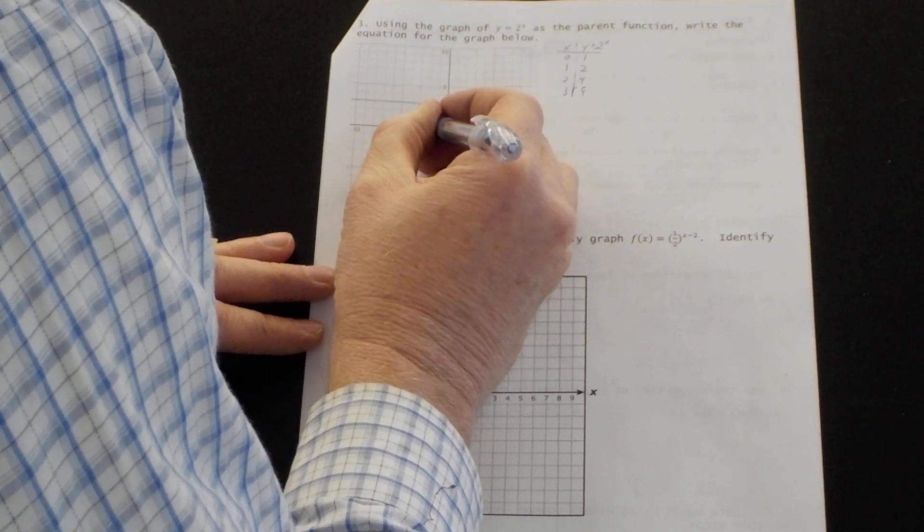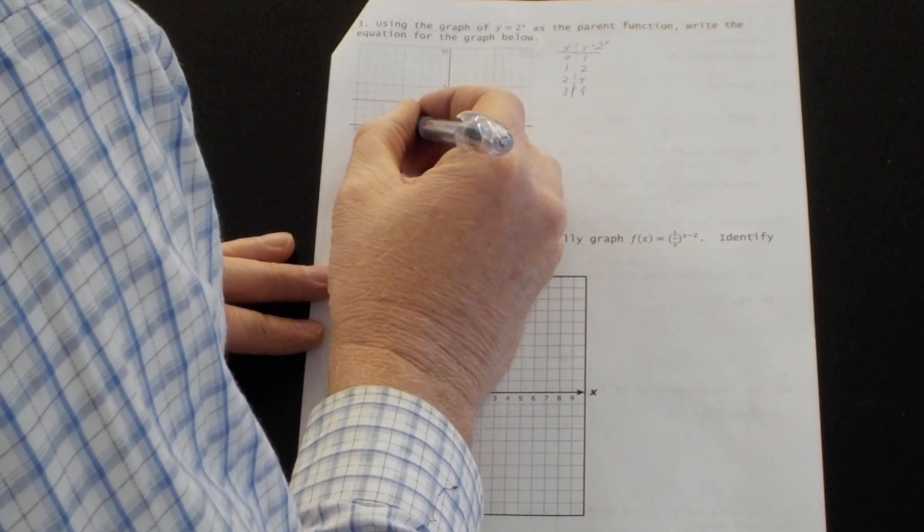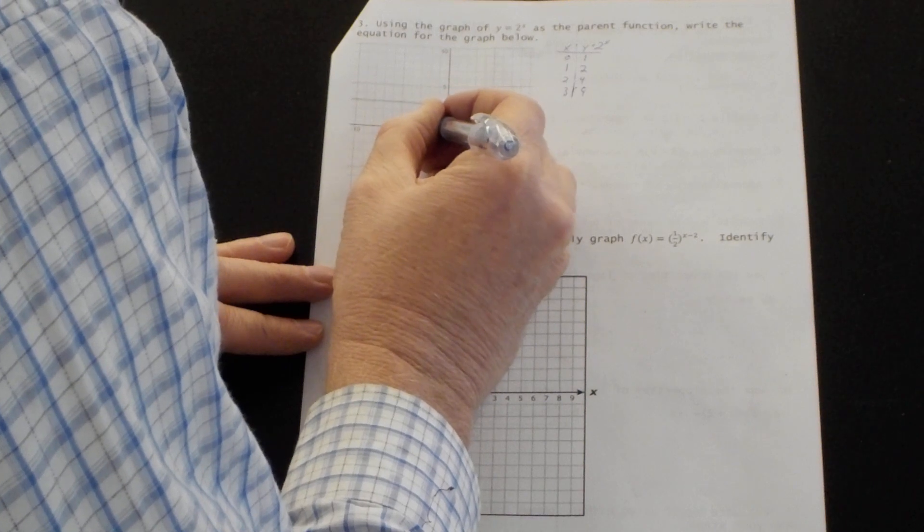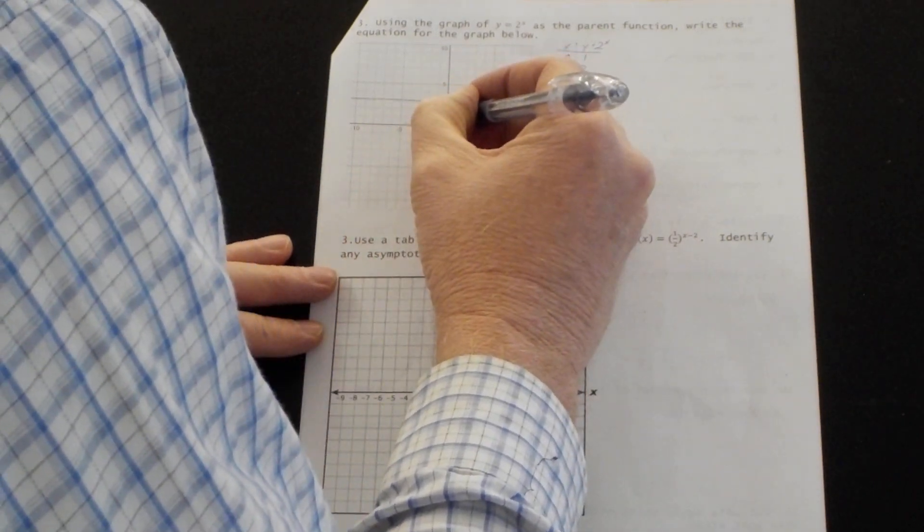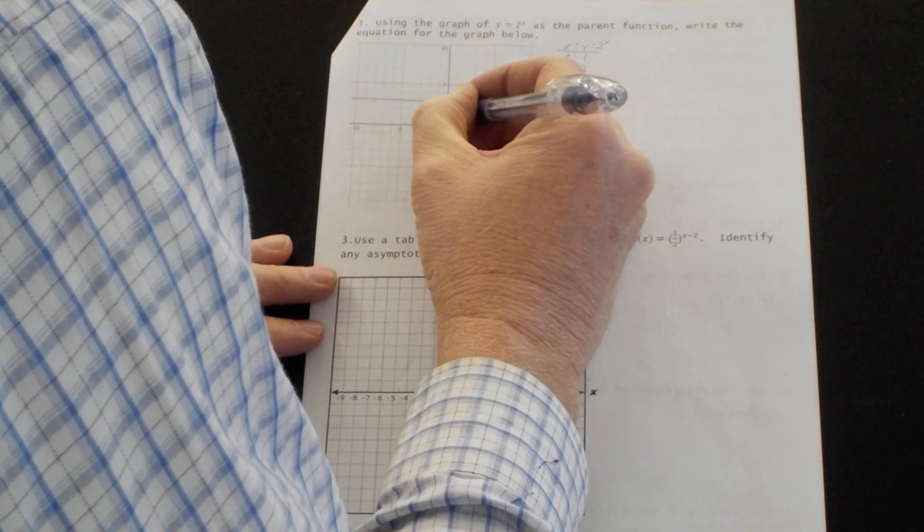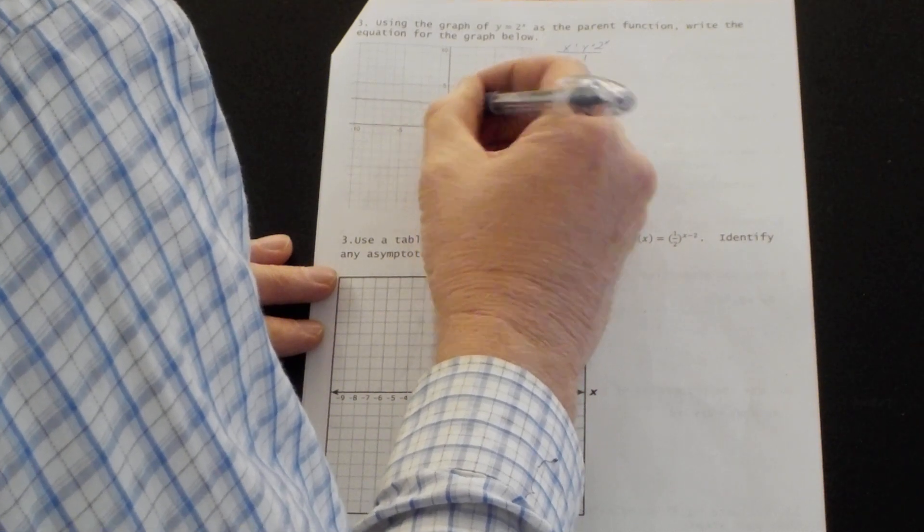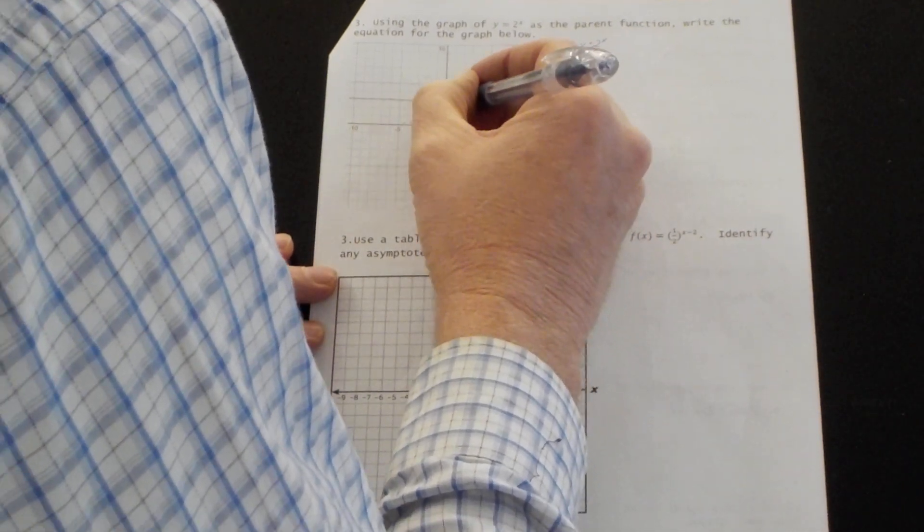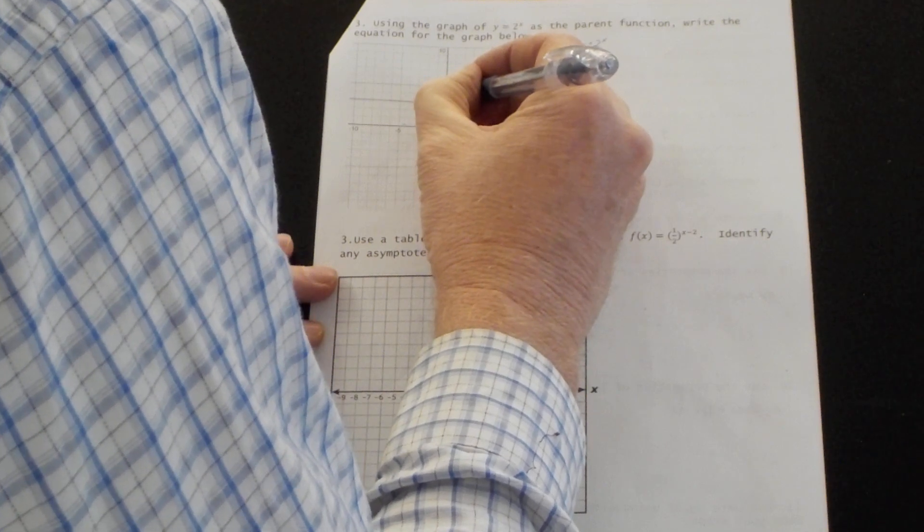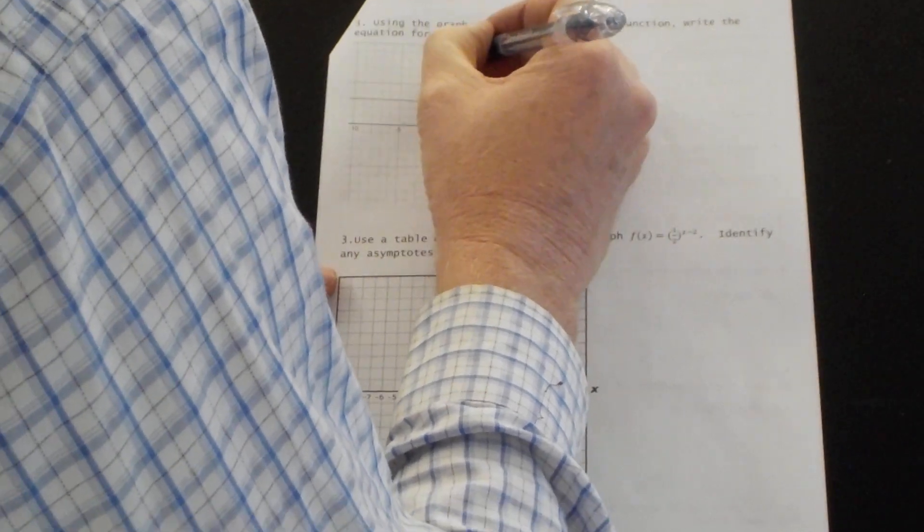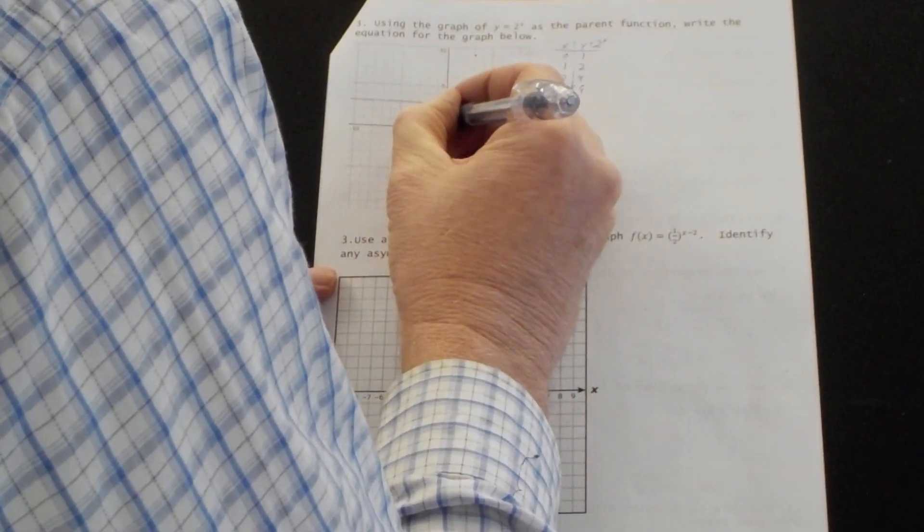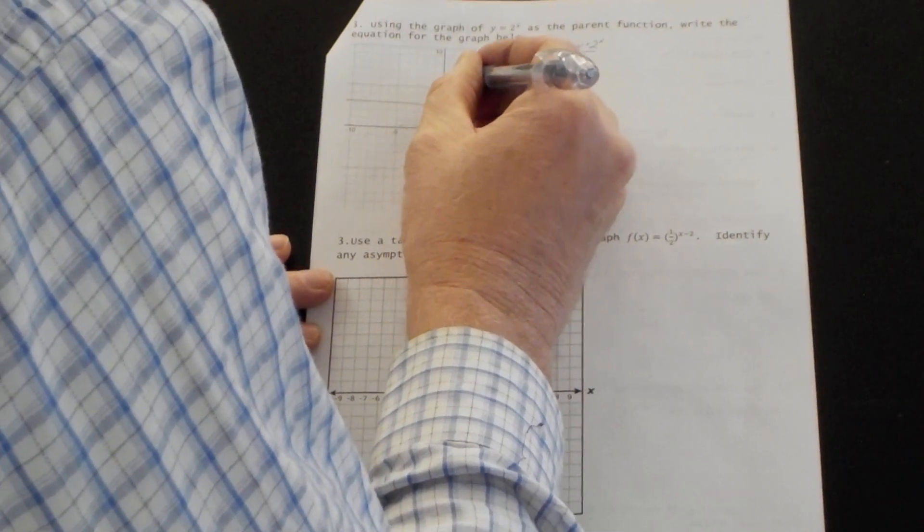And negative one is going to be a half and then a fourth. So it kind of follows along here. And then one, two, and then two, four goes up pretty quickly after that. And then three, nine is right here. So this is the graph of y equals two to the x.